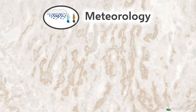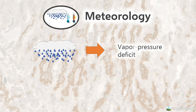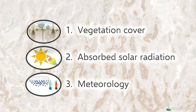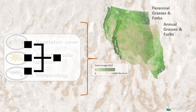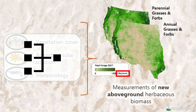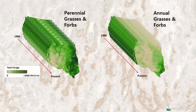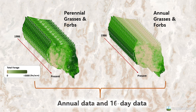Last but not least, moisture and temperature conditions are important for regulating plant growth as well. We use a measure of moisture stress known as vapor pressure deficit, and we also use temperature. Together, these variables help us produce the maps of vegetation production you can access on rangelands.app. The maps are produced in units of pounds per acre of above-ground productivity, which is most useful to managers and livestock producers. These are measuring new above-ground growth, and we produce these maps for each year since the 1980s — going back to 1986 — available as annual maps and as nearly continuous 16-day data.